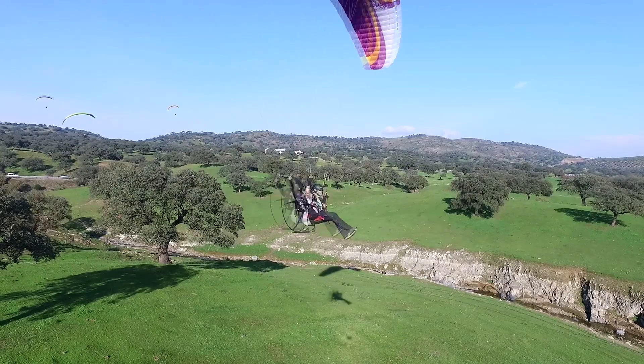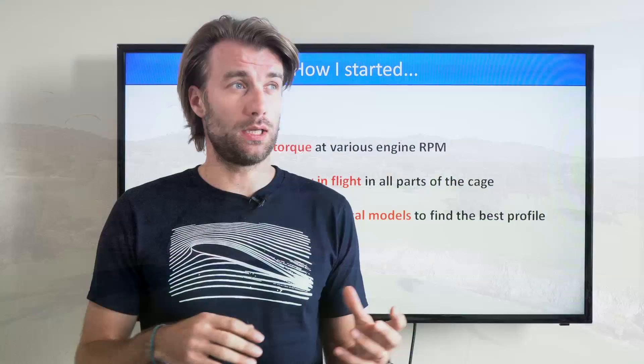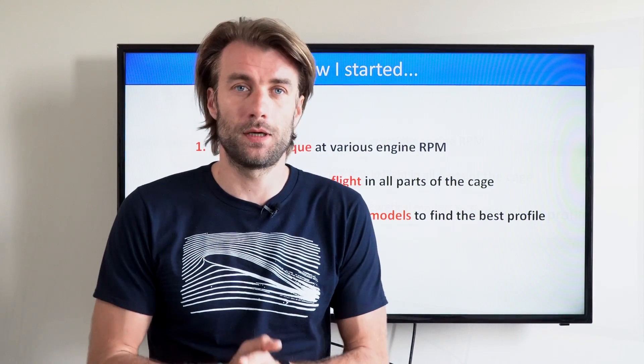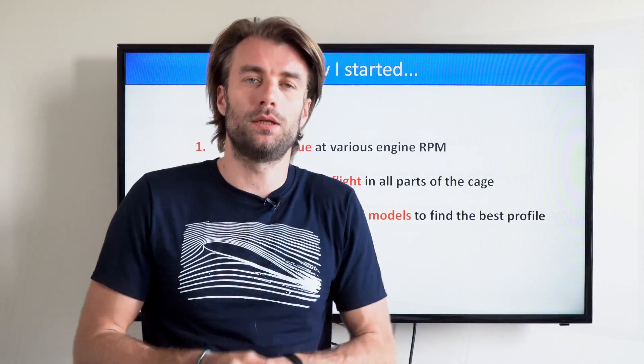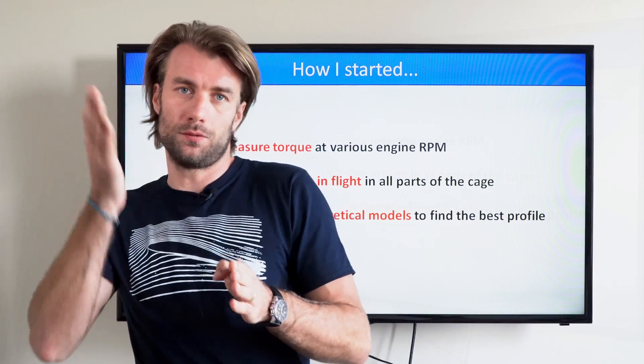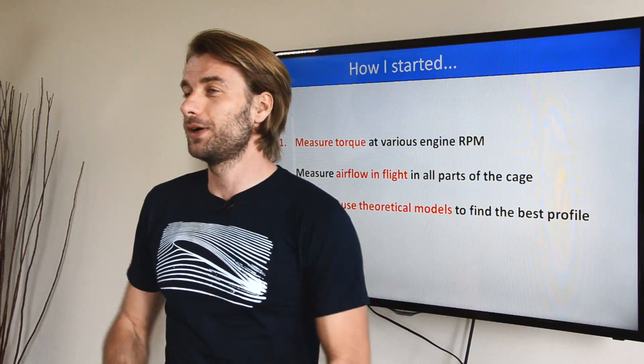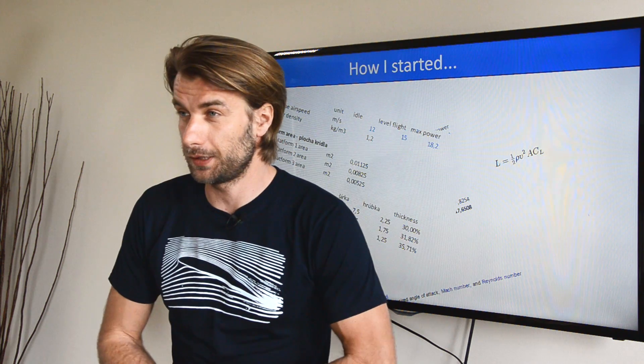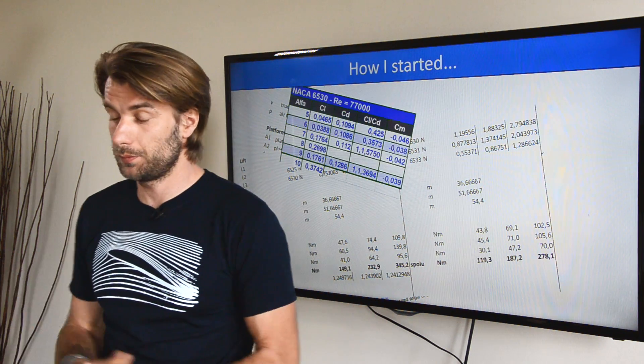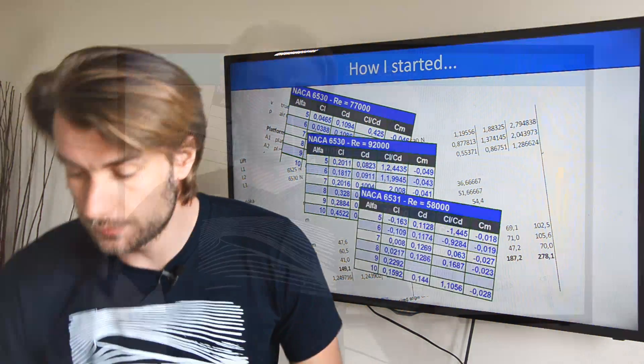The third step was to do all the calculations and computer modeling to find the best profile to build into the paramotor cage. I did a ton of calculations to find the most suitable profile and size. This is the very first prototype of the Scout torque compensation spar — it's part of the cage, and it looks really cool. Imagine how exciting it was to have the first test flight with it.